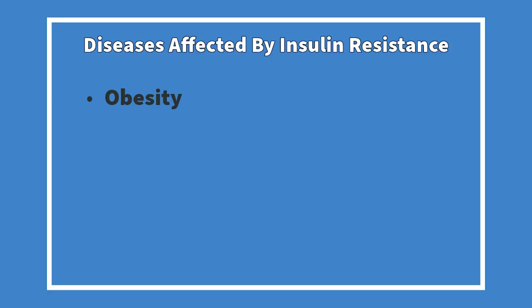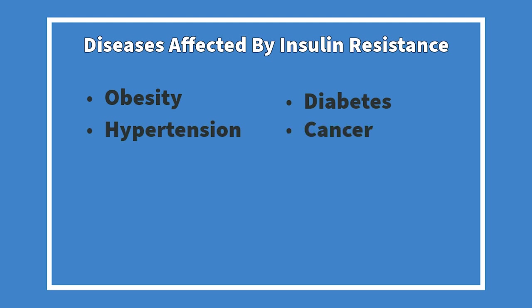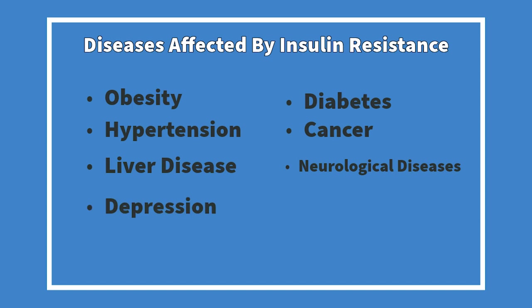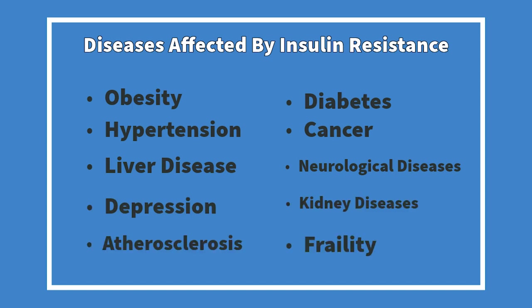But those aren't the only diseases affected by insulin resistance. They include obesity, diabetes, hypertension, cancer, liver disease, neurological diseases, depression, kidney diseases, atherosclerosis, and frailty. Virtually no chronic disease known in medical science does not have a strong relation to the levels of insulin resistance.